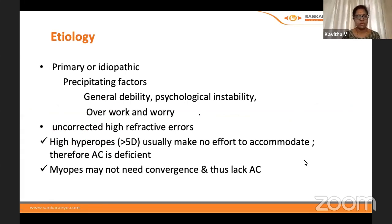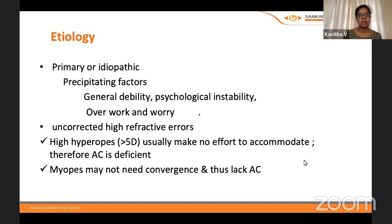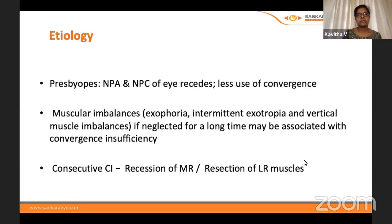Precipitating factors include general debility, psychological instability, overwork and worry, and uncorrected high refractive errors. High hyperopes — usually greater than +5D — make no effort to accommodate, so accommodative convergence is deficient. In myopes, they don't need to converge much for near objects, so accommodation and accommodative convergence are also reduced. In presbyopia, NPA and NPC recede, and there is less use of convergence.